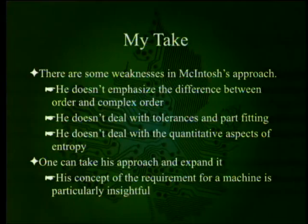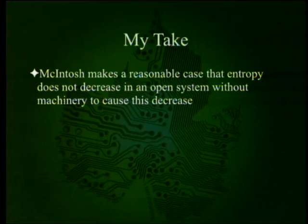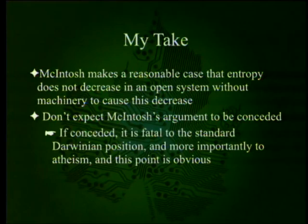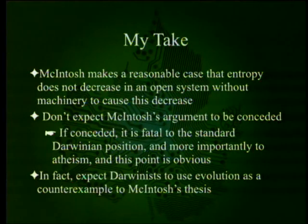McIntosh makes a reasonable case that entropy does not decrease in an open system without machinery to cause this decrease. Don't expect McIntosh's argument to be conceded by those on the other side — if conceded, it is fatal to the standard Darwinian position and, more importantly, to atheism. Expect Darwinists to use evolution as a counter example: 'we know McIntosh can't be right because evolution happened' — which of course is reasoning in a circle. We know our conclusion is correct, therefore he can't be right.